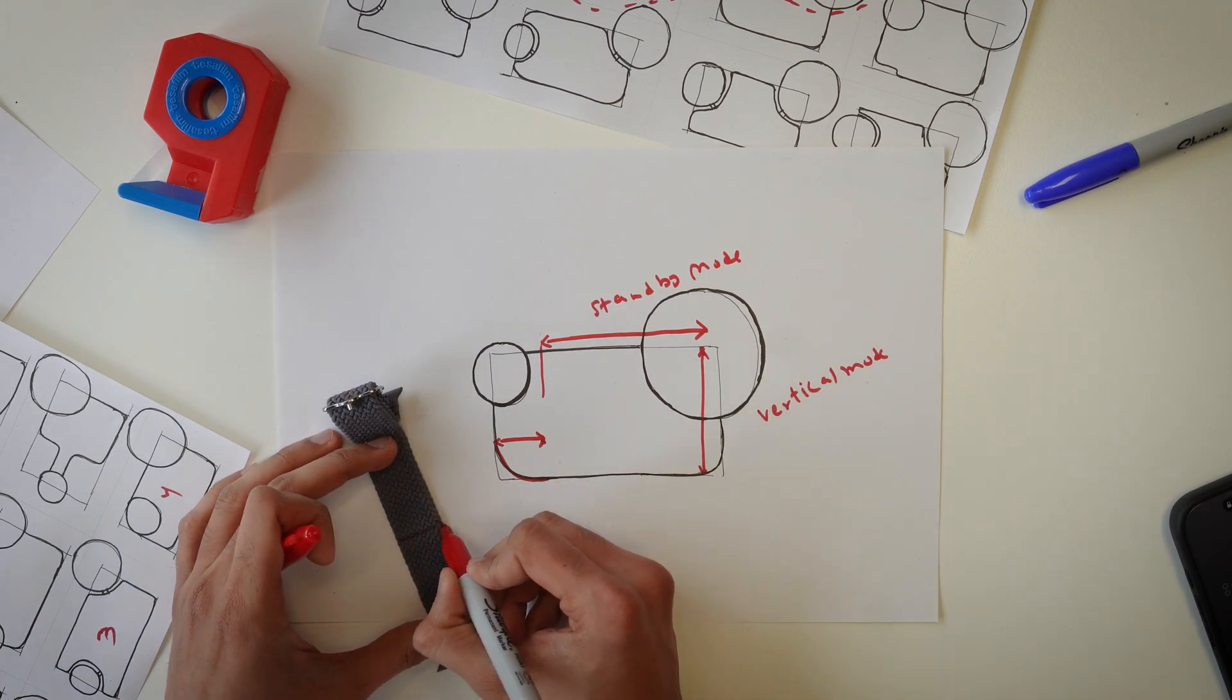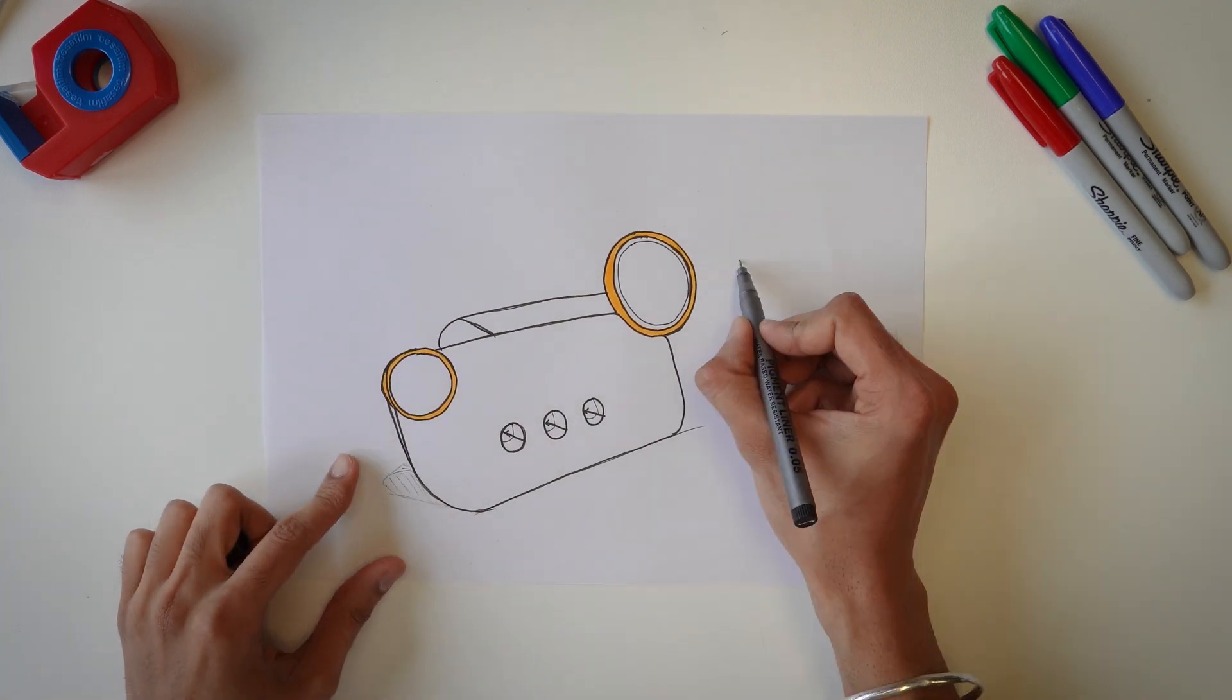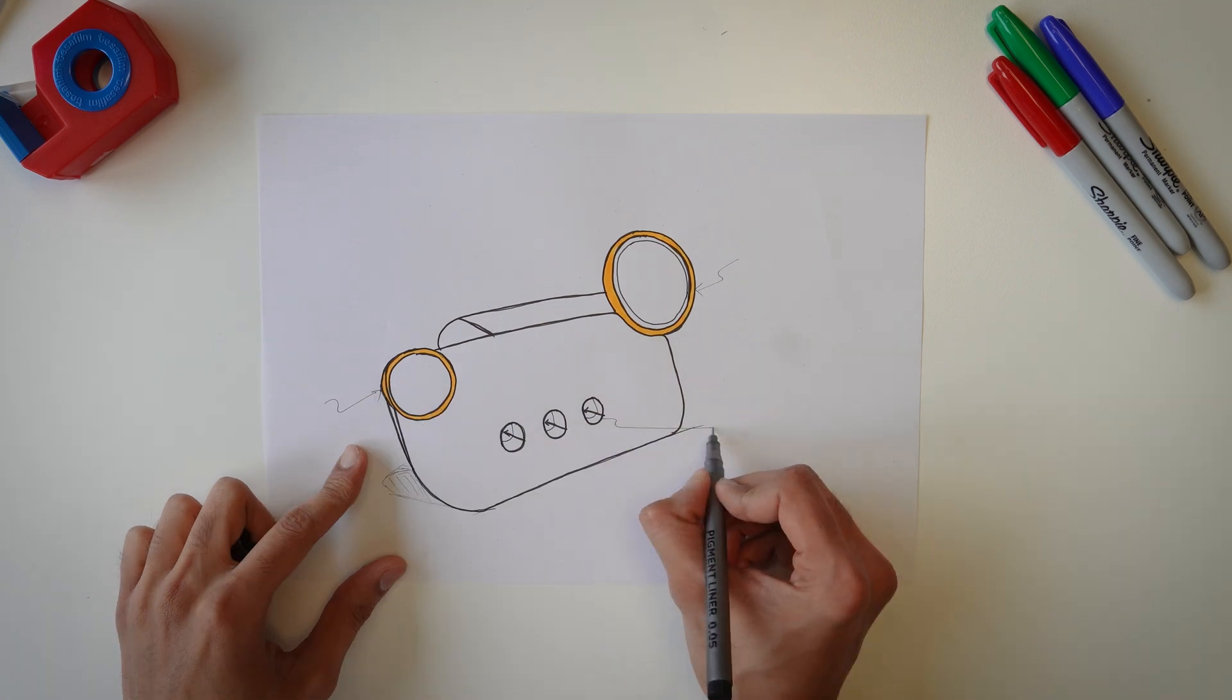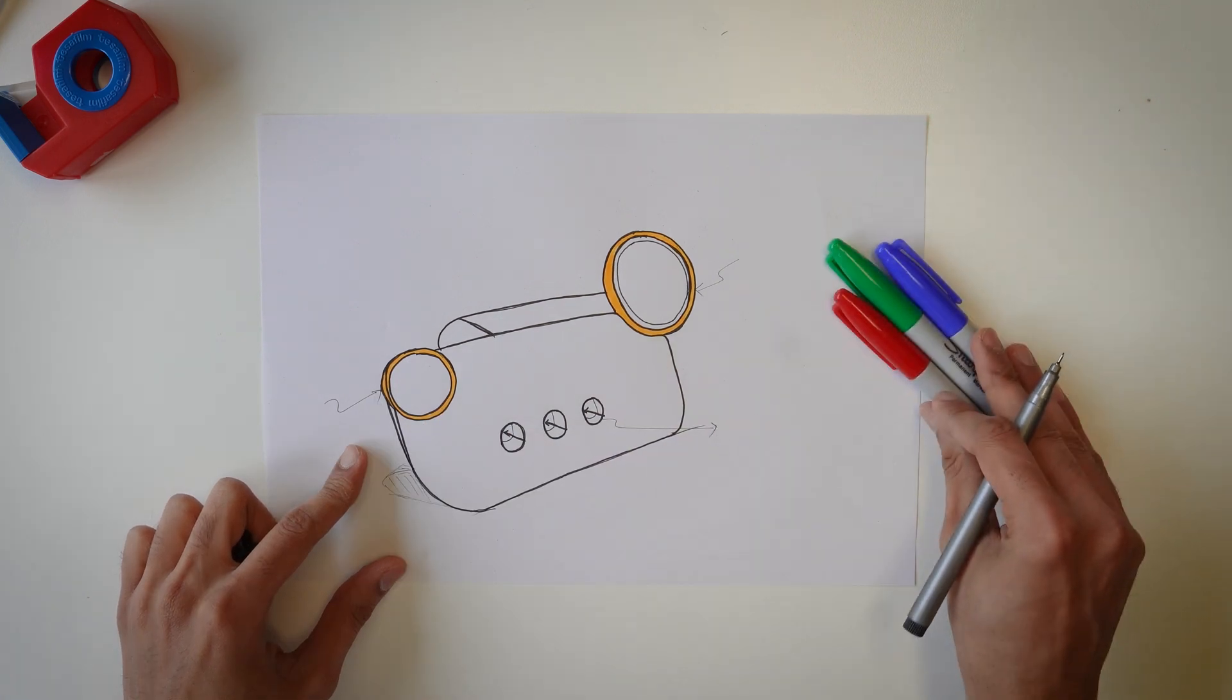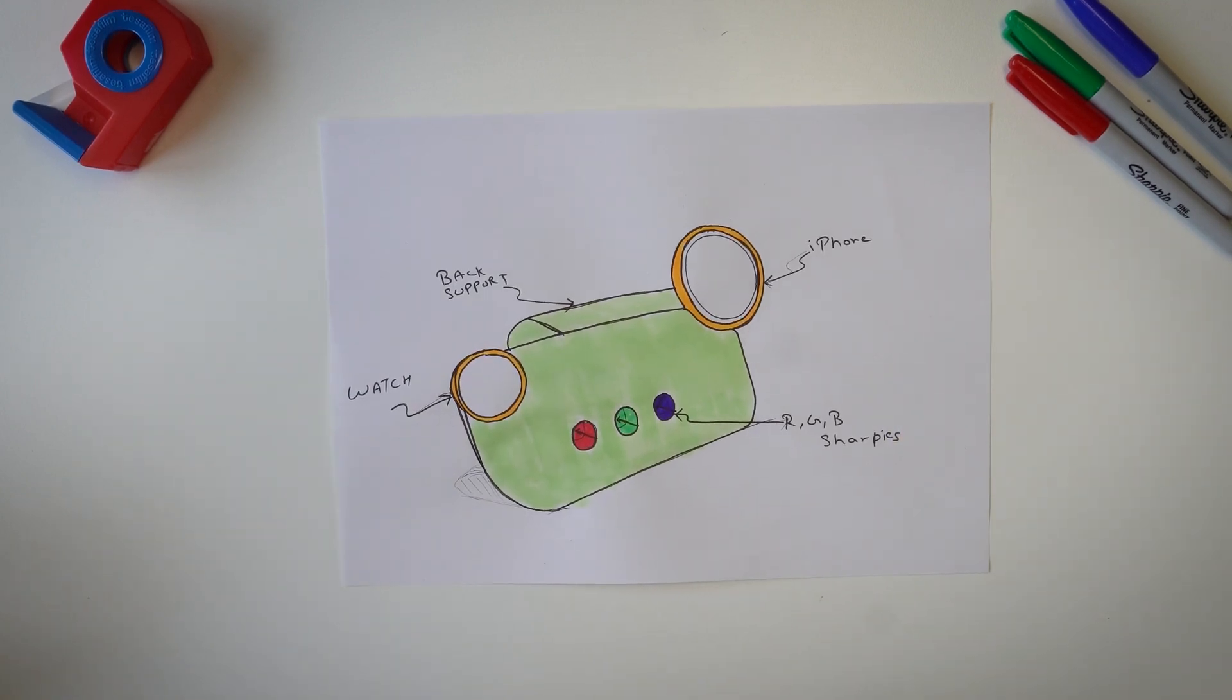Small tip here: get yourself a nice pair of calipers for all these measurements. Anyway, in this last step I also added a few extra touches, like these rings around the chargers just to add a bit of color, and these three small holes just to hold my RGB Sharpies—because why not. And now I had the final concept: my own MagSafe charging dock inspired by abstract art and Memphis design.